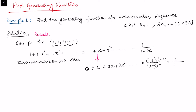So this gives us: we have calculated the generating function for the sequence of 1s, and now we have calculated the generating function for the sequence of natural numbers.